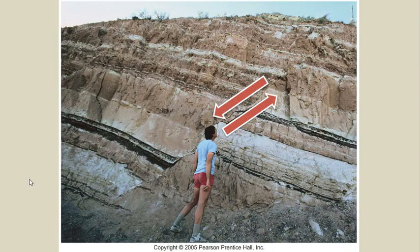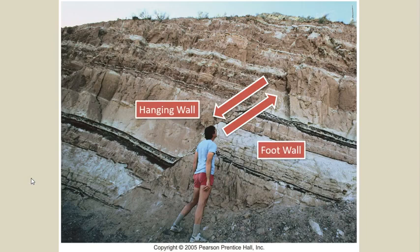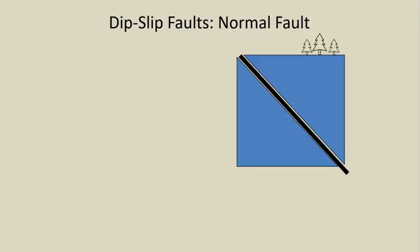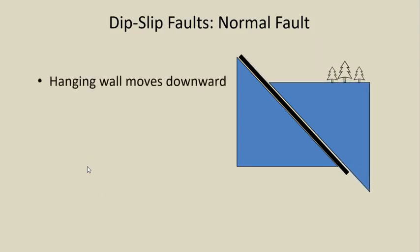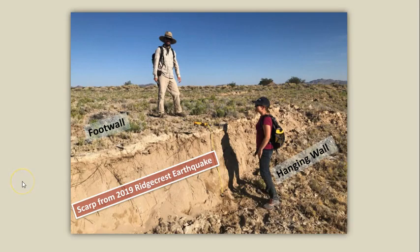This photo shows a fault where the hanging wall moved downward along the fault surface. If the hanging wall moves downward along a dip-slip fault, it is called a normal fault. The hanging wall slides downward when tensional stress is acting on the crust. Here's a normal fault that moved recently, producing an earthquake that you may have felt.